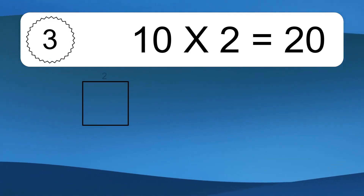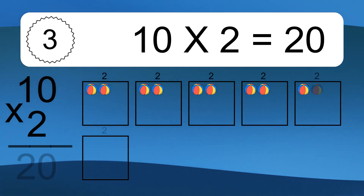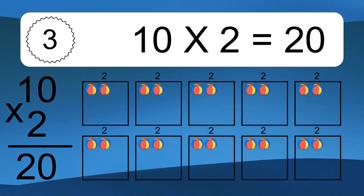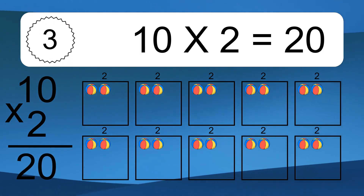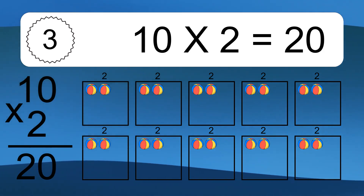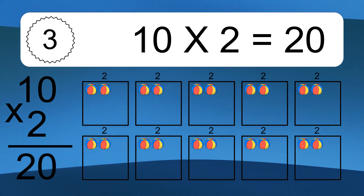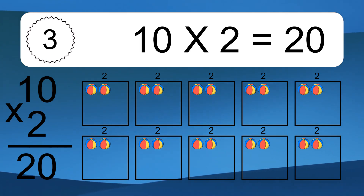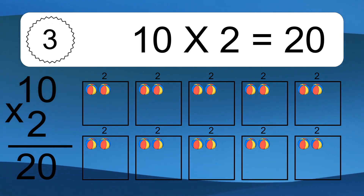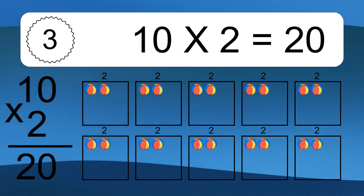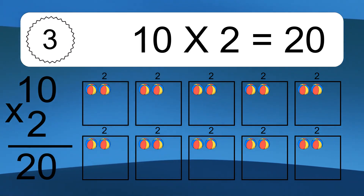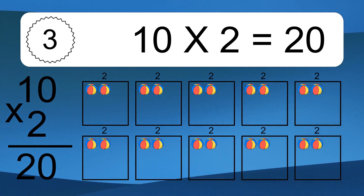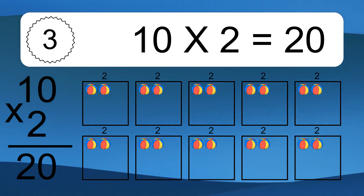10 times 2 equals 20. We have 10 boxes, and each box has 2 colorful balls inside. If you count all the balls in all the boxes together, you will have 10 times 2 balls. This equals 20 balls.